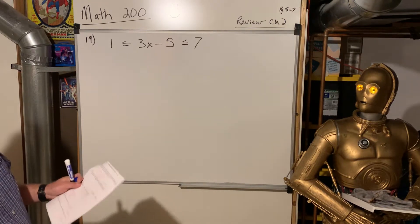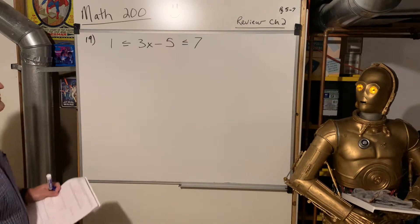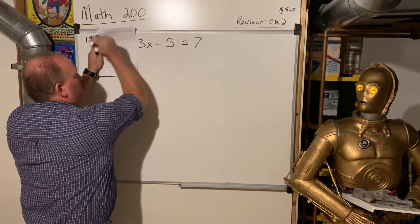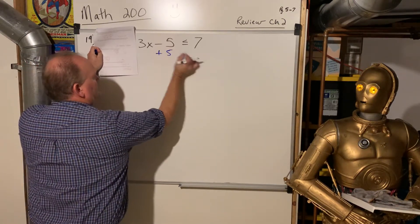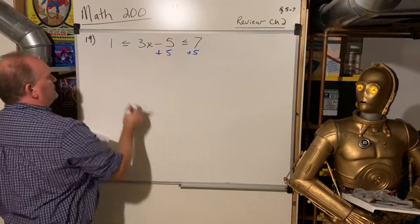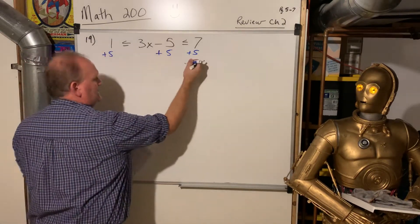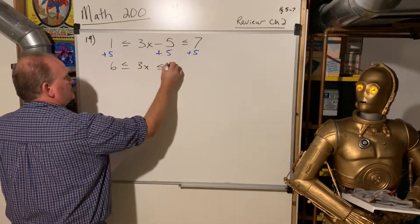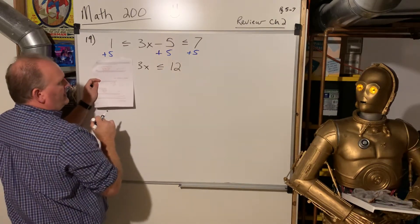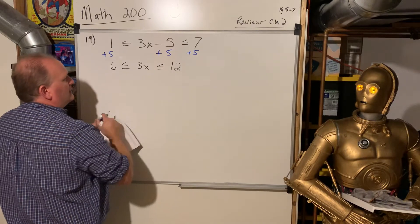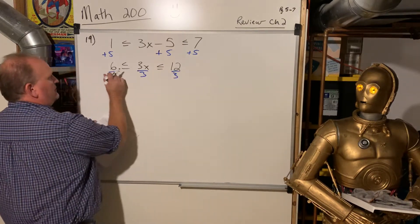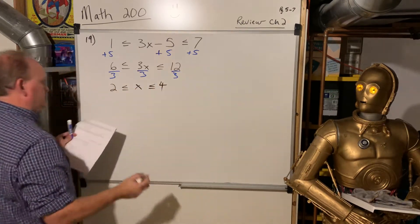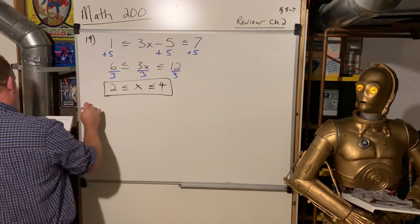So now you can forget about all those words and just solve this compound inequality. Remember the trick? You just cover that little piece up. If this were the inequality we're trying to do, we would add 5 to isolate the variable. And then you uncover it and go, oh look, a third side. So all three. It's like working a three-sided equation. So now we got 6 is less than or equal to 3x, less than or equal to 12. And then again, you divide both sides by 3. And so there's our answer. 2 is less than or equal to x, which is less than or equal to 4.